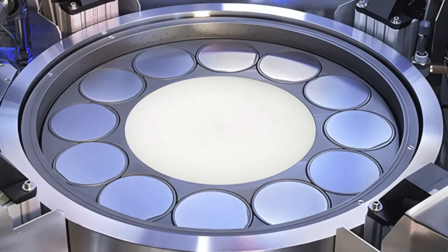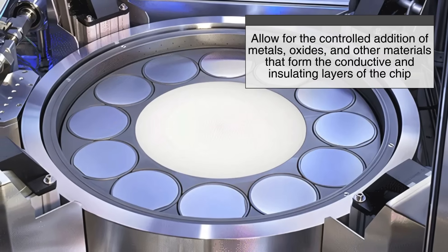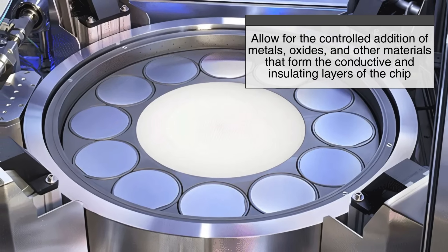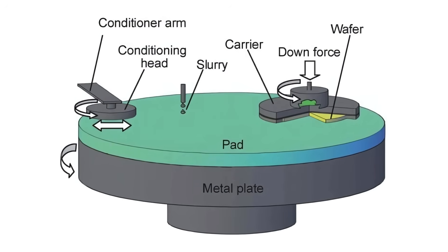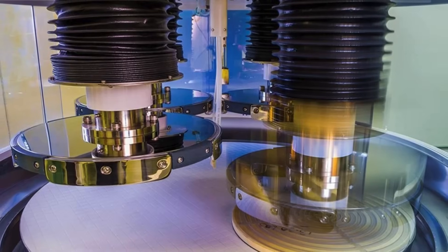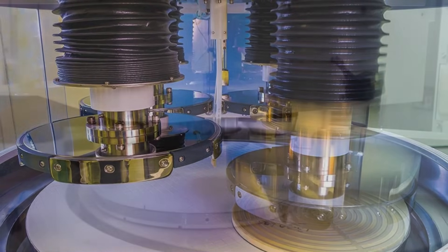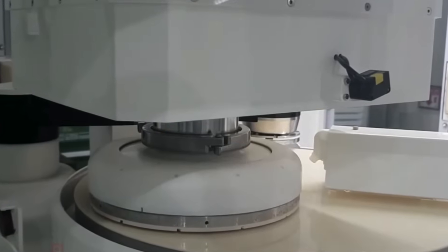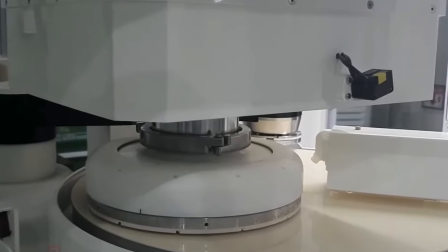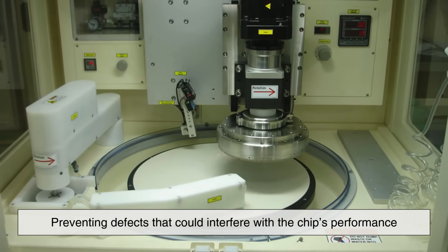These processes allow for the controlled addition of metals, oxides, and other materials that form the conductive and insulating layers of the chip. Deposition is followed by chemical mechanical polishing, which smooths out the wafer surface between layers to maintain precision in the circuit design. This process ensures that each new layer is evenly distributed, preventing defects that could interfere with the chip's performance.